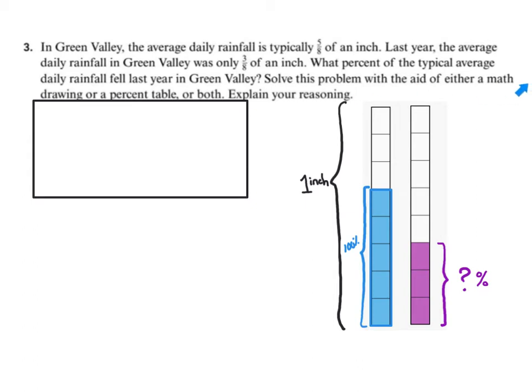What percent of the typical average daily rainfall fell last year in Green Valley? Solve the problem with the diagram or a percent table or both. So let's start by looking at the diagram. And we'll notice that we have the 5 eighths represents all of the rainfall. So all of the rainfall would be 100%.